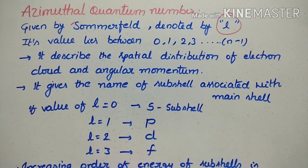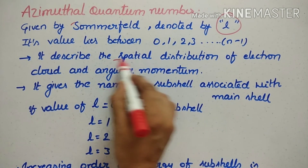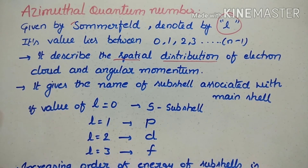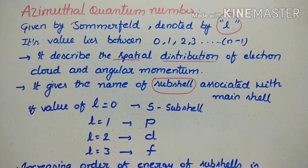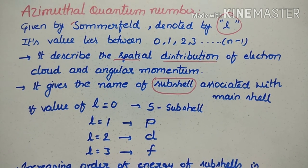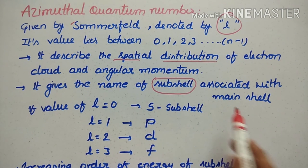The azimuthal quantum number is also known as the angular quantum number or subsidiary quantum number, but it is famously known as the azimuthal quantum number. It describes the spatial distribution of the electron and gives the name of the subshell associated with the main shell — the subshell to which the electron belongs.